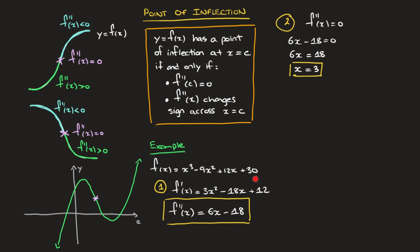Step three: to check whether f''(x) changes sign across x equals 3, I construct a sign table with two rows — x values on top and the sign of the second derivative below. Since f(x) and its derivatives are defined for all real numbers, I write negative infinity on the left and positive infinity on the right. I add x equals 3 to the top row, splitting the table in two. When x equals 3, the second derivative equals zero, so I write 0 there.